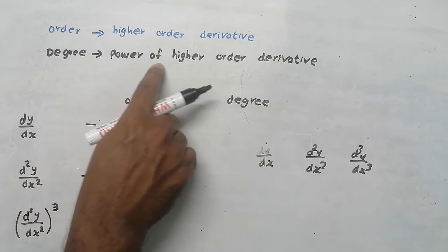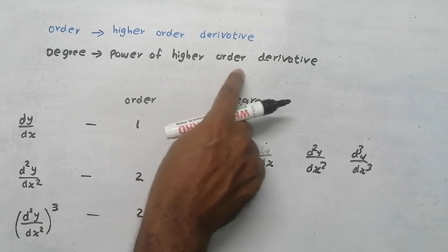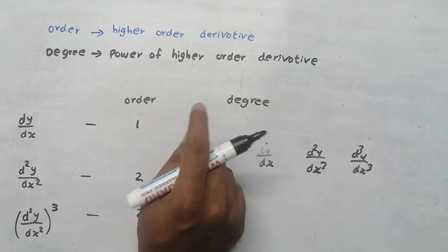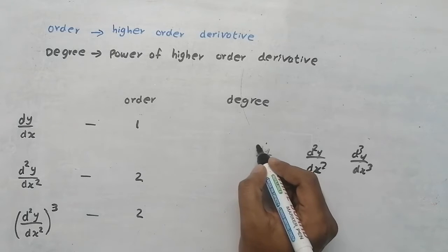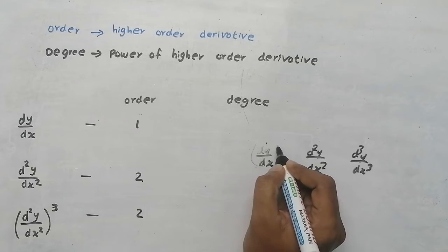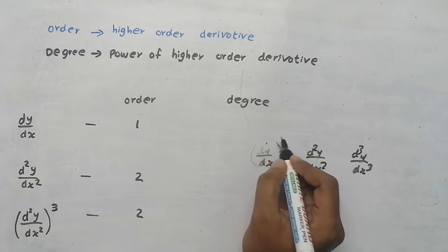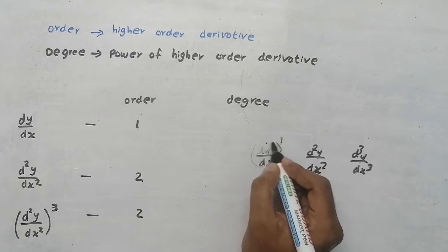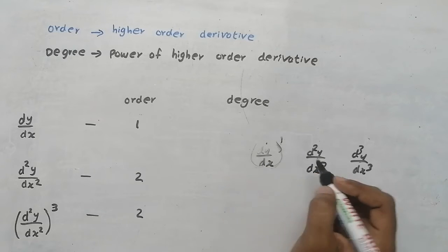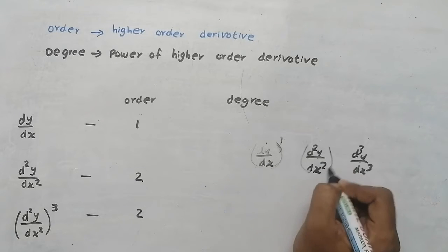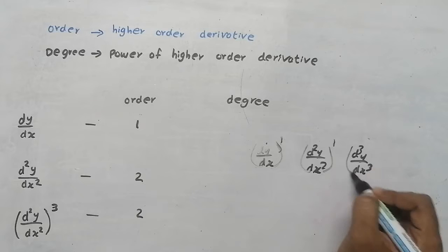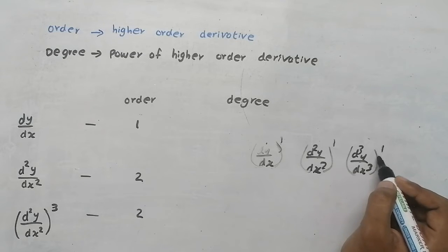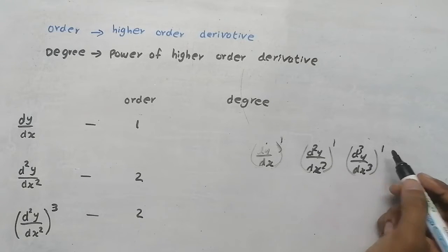Degree means the power of the highest order derivative. So this is a first order derivative — the power of that, in this case, is 1. So the degree of this equation will be 1. Here also the power is 1, so degree will be 1. Here also the power is 1, so degree will be 1.